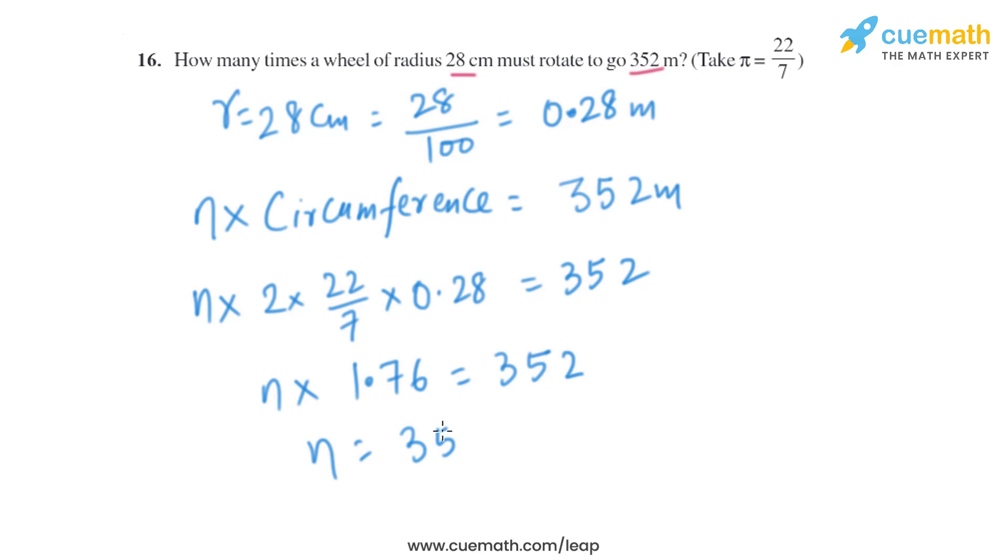The value of n is 352 divided by 1.76, which equals 200. So the wheel will rotate 200 times to cover a distance of 352 meters.